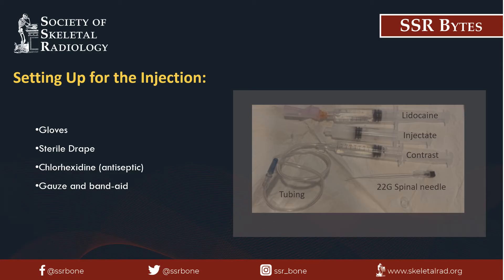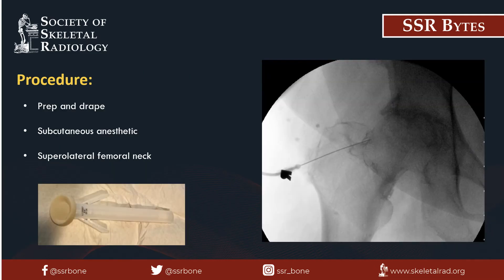In addition to the medications and needles, we also have our gloves, sterile drape, antiseptic, gauze, and a band-aid, and are set up for the procedure. After you've decided your approach and the area is marked, the medications are drawn up in a sterile fashion. The marked site is cleaned with antiseptic and prepped with a sterile drape. Before anesthetizing, take a fluoroscopic image with your anesthetic needle overlying the marked area to be sure the alignment is still correct and nothing has moved during prep. Once confirmed, the subcutaneous anesthetic is injected at the marked site.